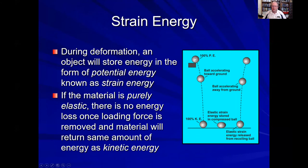In the example of a ball dropped from a shelf, it has 100% potential energy at the top. As gravity accelerates it toward the ground, it picks up kinetic energy, reaching 100% kinetic energy just before impact. The ball then compresses, storing elastic strain energy as potential energy, and as it rebounds to its normal shape, it accelerates upward again — converting back to kinetic energy. This is how bouncing balls continue bouncing, exchanging potential and kinetic energy. A purely elastic material would bounce indefinitely without losing height, though no such material truly exists.